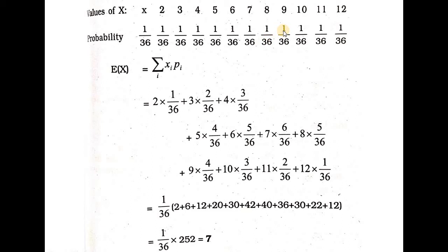If you take 2 dice, the minimum summation is 2 (both dice showing 1). The maximum addition is 12 (both dice showing 6). The total sample space has 6 times 6 equals 36 outcomes.